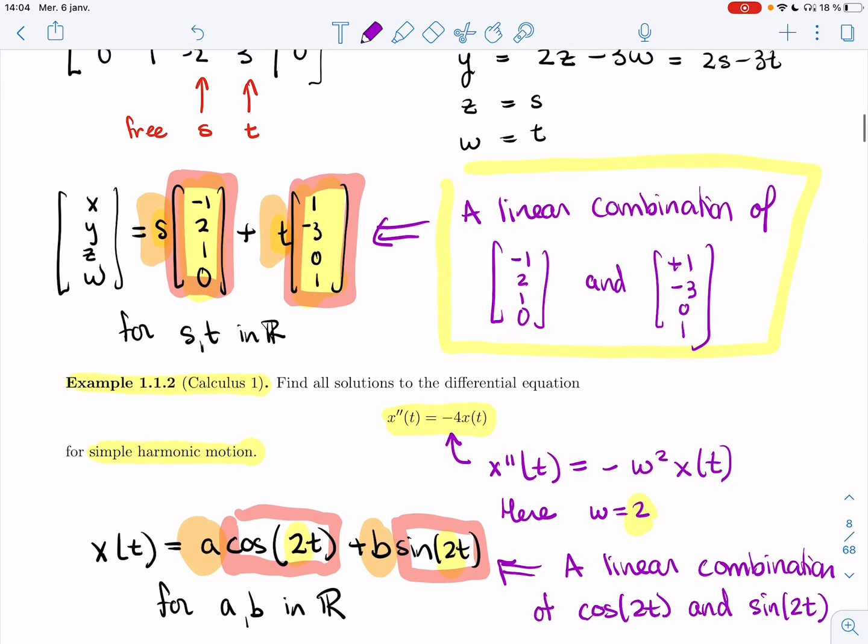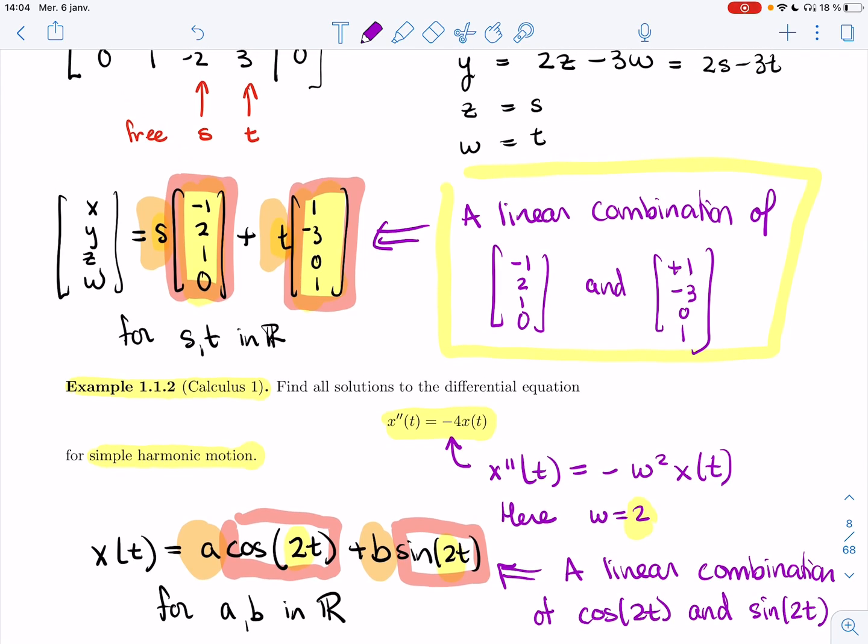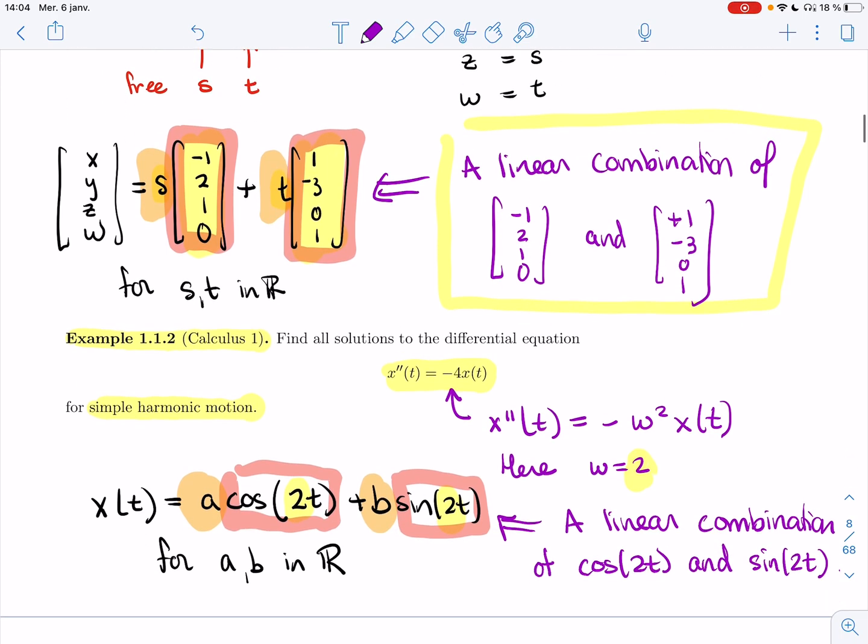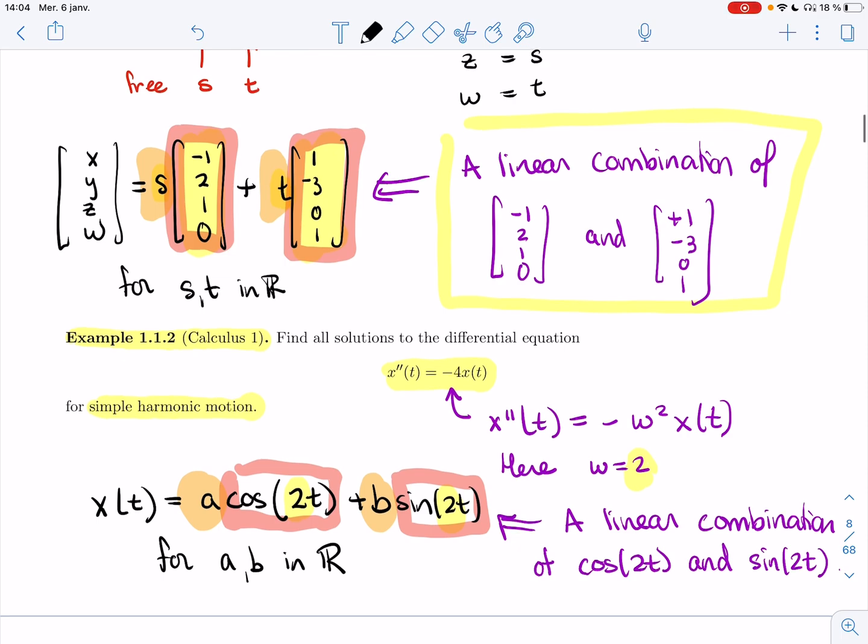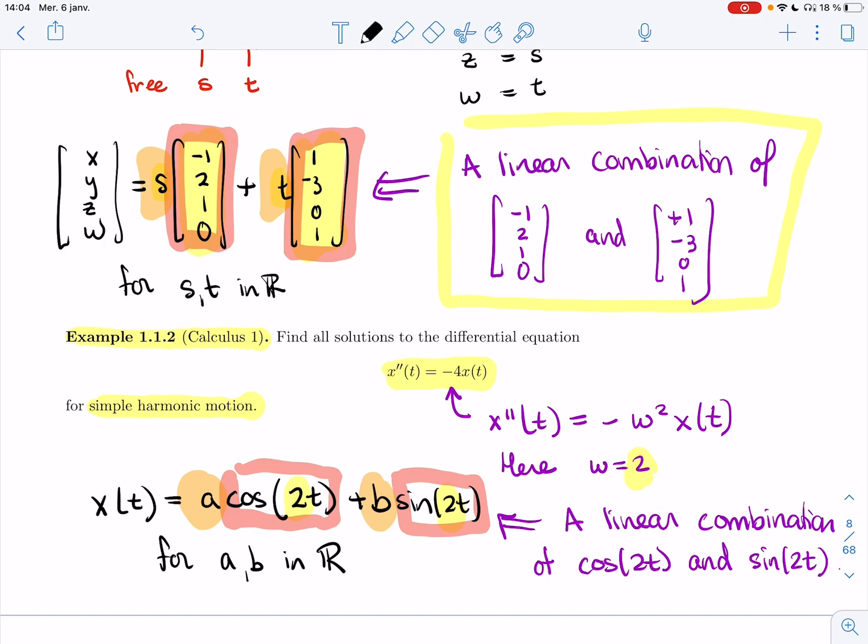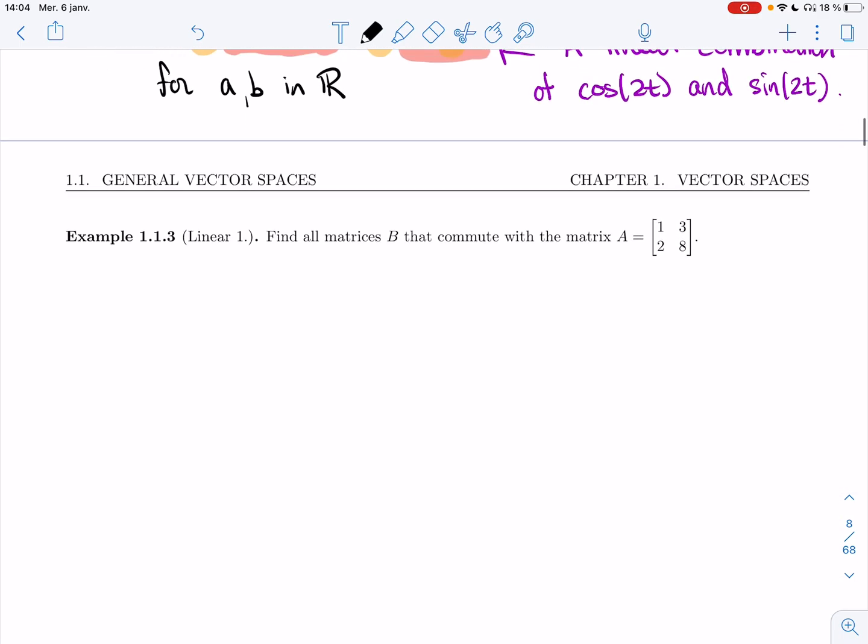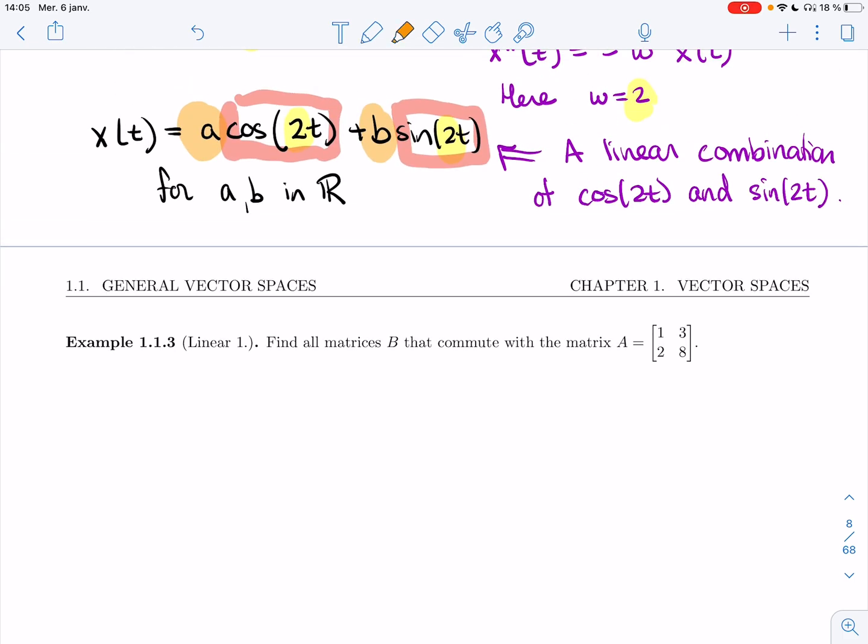We have two completely different problems: one about differential equations and springs and masses, and one about just solving a linear system. The solutions don't look the same, but they have the same spirit, the same general shape. I'm going to show you another example from last semester in linear algebra. In example 1.1.3, let's say I'm asked to find all matrices B that commute with this specific matrix A. We let B have entries a, b, c, d.